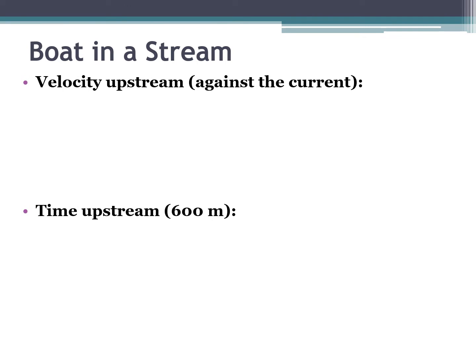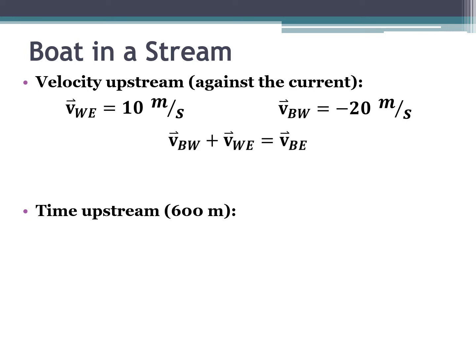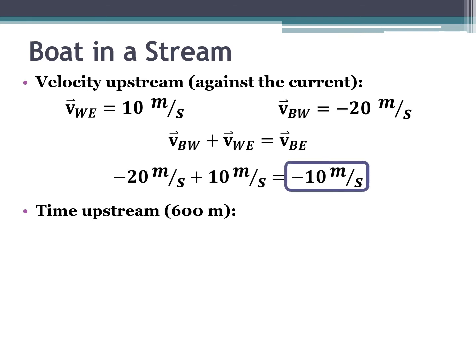Going upstream means going against the current, so the two vectors oppose each other. The water is moving relative to the earth at 10 meters per second, and the boat moves relative to the water at 20 meters per second — but in the negative direction because it opposes the current. You add those two vectors together, including the direction. That 20 meters per second has a negative sign indicating direction, so technically you're adding the two vectors — one just has a direction included. The result is negative 10 meters per second.